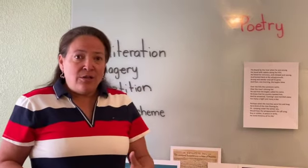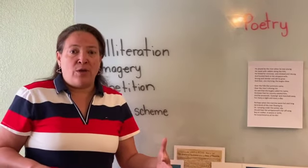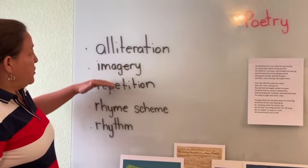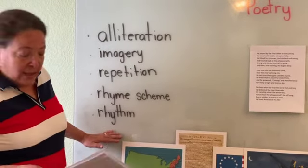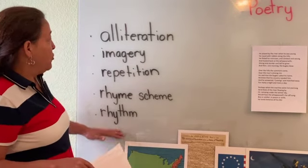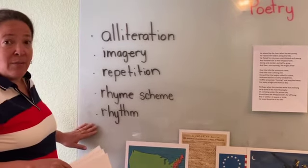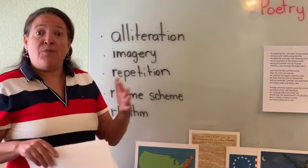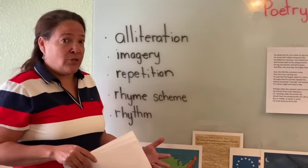So to understand poetry, boys and girls, there's some vocabulary words you have to understand. Now these are just a few things that can be in a poem. There are several elements of poetry — there are five elements of poetry in this poem. But again, the list is long, and hopefully as you get older you'll start learning more of the elements of poetry.